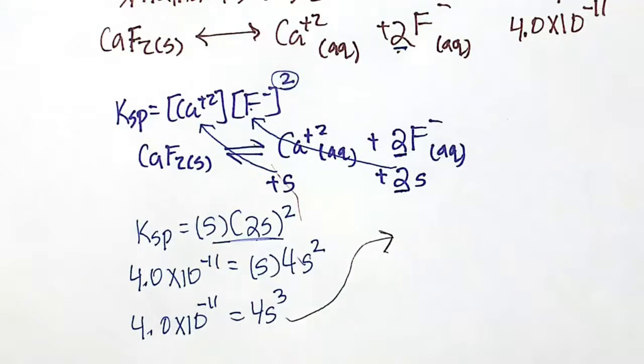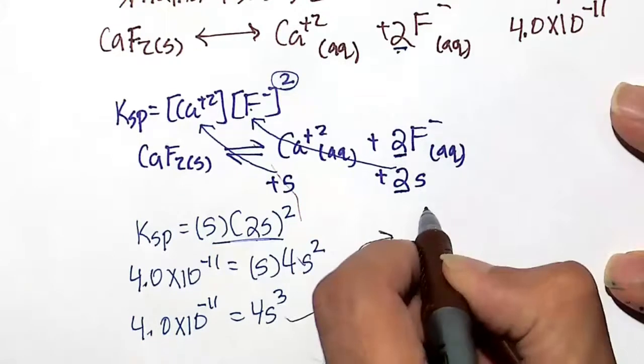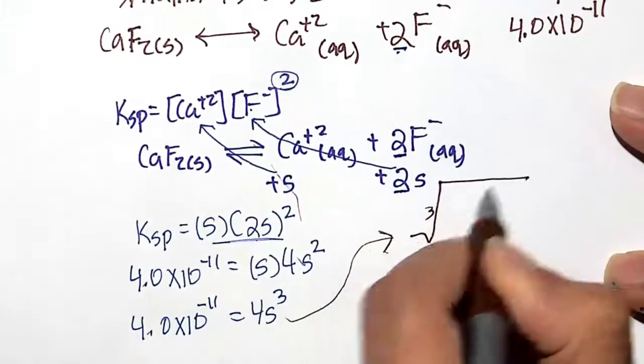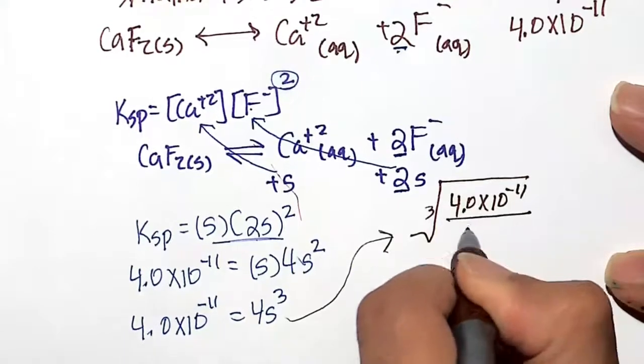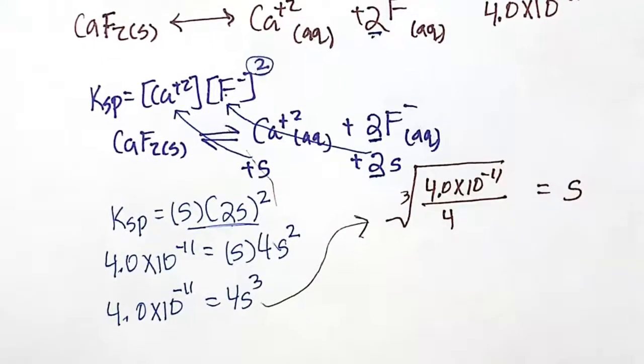Now a situation emerges where we have to solve for solubility s. Units are going to be moles over a liter. So we take the cube root of 4.0 times 10 to the minus 11 divided by 4. That isolates s and s alone.